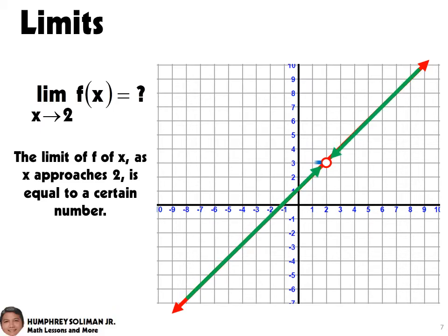And this is equal to 3, since f of x is headed towards the same value of y from both sides. If ever the values of y are not the same from the left and from the right, we can say that the limit does not exist.